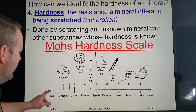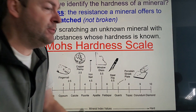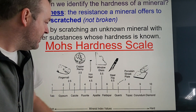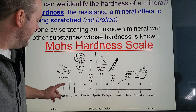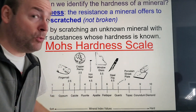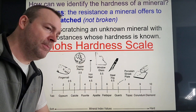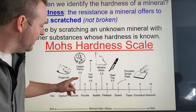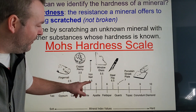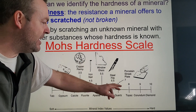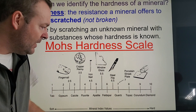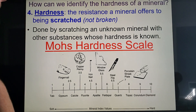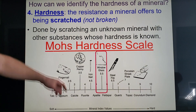Talc is often used in baby powder during diaper changes because it's softer than human skin, so the baby doesn't get diaper rash — they call it talcum powder. Working up the scale: fingernail is 2.5, a copper penny is about 3.5, an iron nail is about 4.5, glass is 5.5, and so on. You can narrow down the hardness range to help identify the mineral.